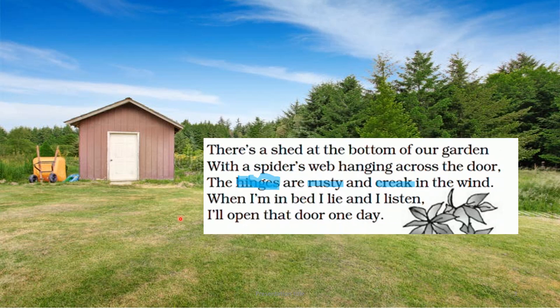Through this poem, the poet is trying to share one of his childhood desires — the desire he had in his childhood. Now let's recite the poem. I want all the children, when I am reciting the poem, you also recite with me. You can open your book and recite from there or you can see the screen and recite from here. 'There's a shed at the bottom of a garden with a spider's web hanging across the door. The hinges are rusty and creak in the wind. When I am in bed, I lie and I listen. I'll open the door one day.'